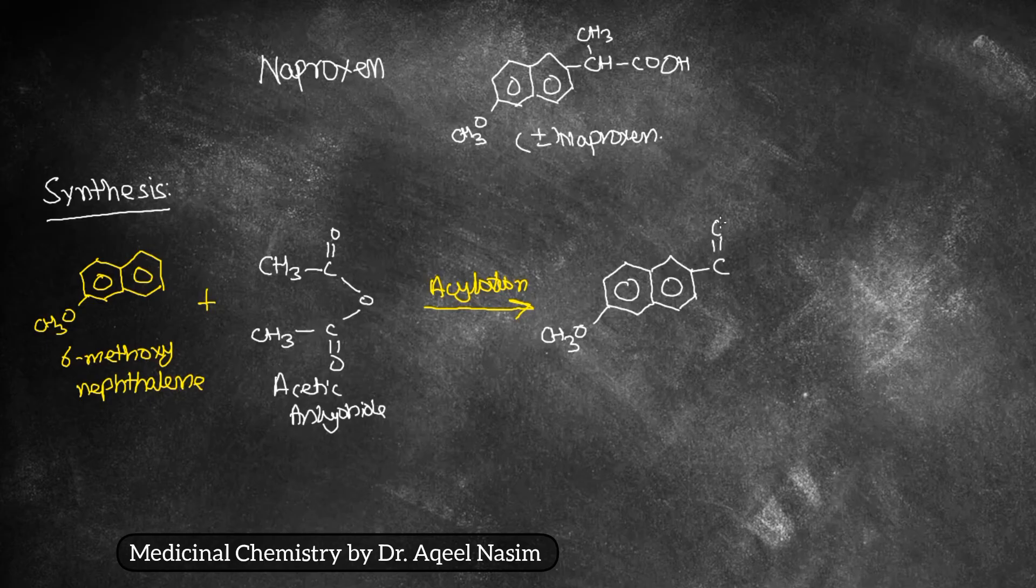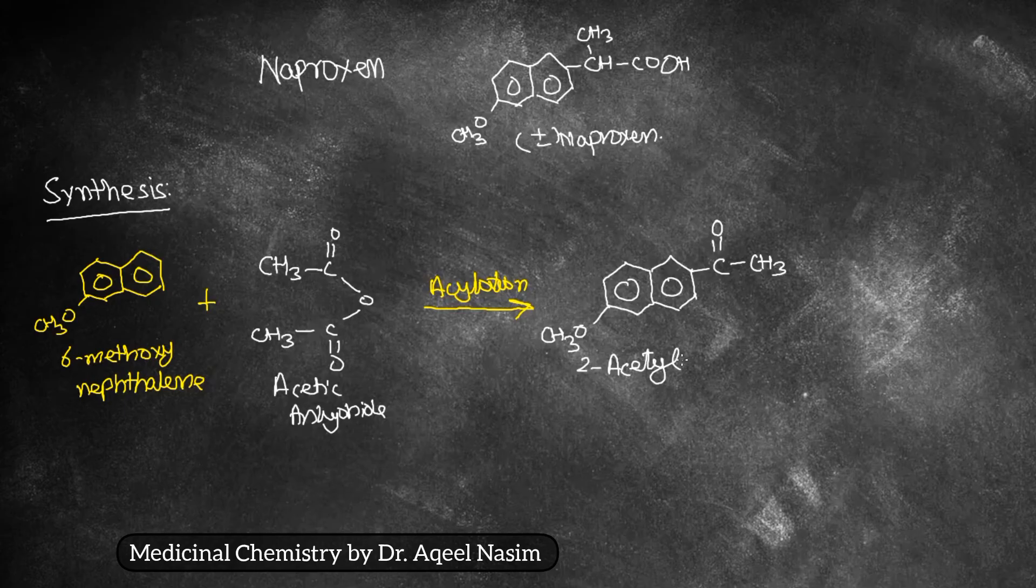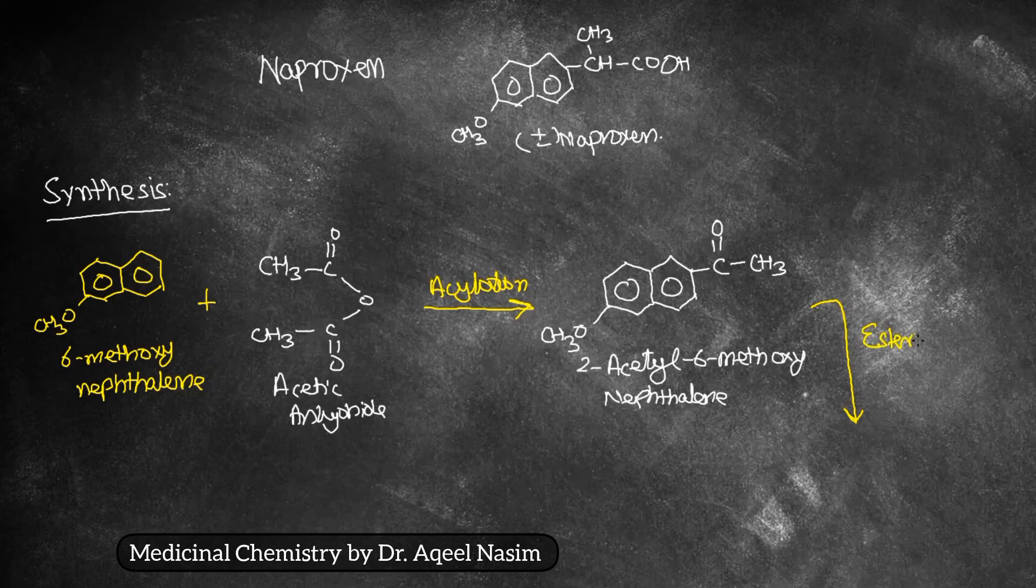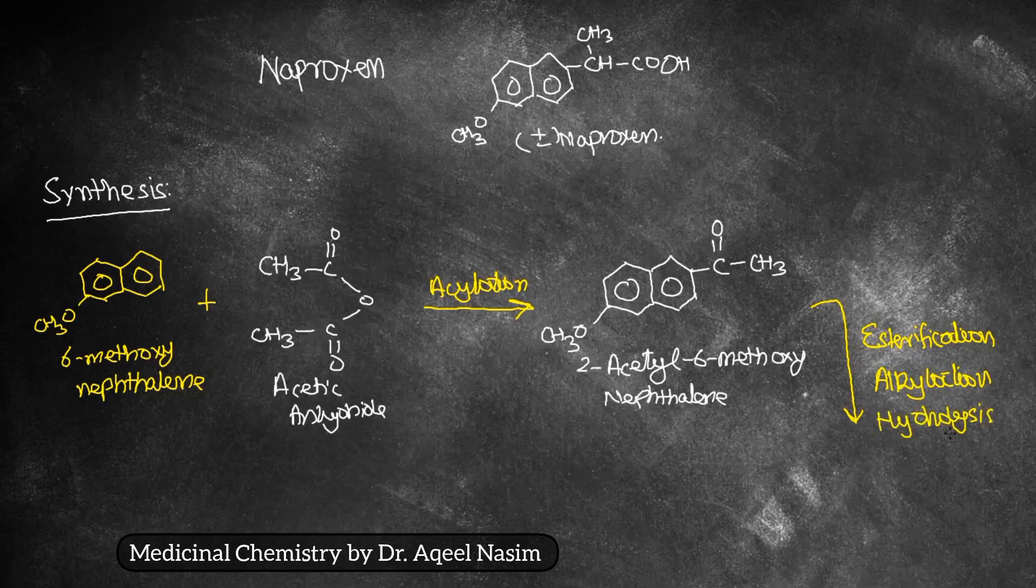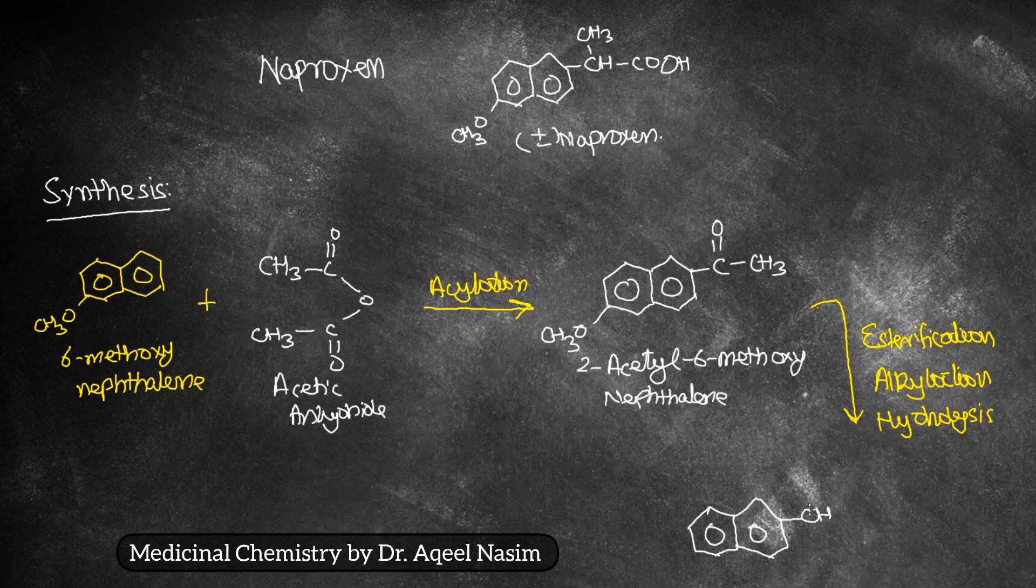This forms an intermediate compound known as 2-acetyl-6-methoxy naphthalene. This intermediate then undergoes further esterification, alkylation, and hydrolysis to yield the final product, naproxen. Thank you.